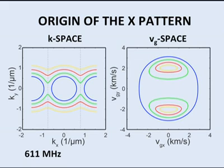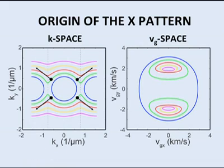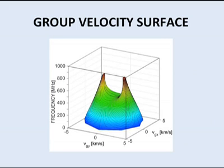These two circles persist at higher frequencies. In k-space, waves go very strongly perpendicular to the turning points in the curves. In group velocity space, this corresponds to joining the tangents of the circles. This produces the X shape we saw. If we see all frequencies together, group velocity space looks like this.